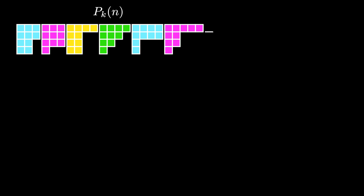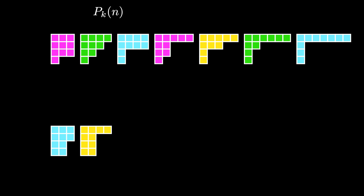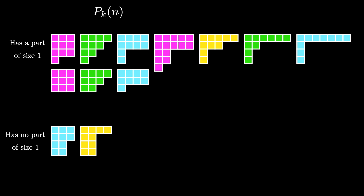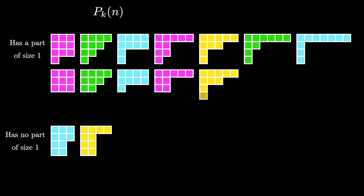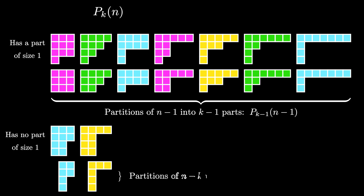Now we can present our primary result about the number of partitions of n into k parts. If we have all the partitions of n into k parts, we can divide these into two disjoint sets. The first set are the partitions that have a part of size 1, and the second set consists of the partitions with no part of size 1. The partitions that have a part of size 1 are in 1-to-1 correspondence with those partitions where we remove one of the parts of size 1. These are just the partitions of n minus 1 into k minus 1 parts, counted by p sub k minus 1 of n minus 1. For each of the partitions that have no part of size 1, we can remove 1 from each part, resulting in a partition of n minus k into k parts, counted by p sub k of n minus k.